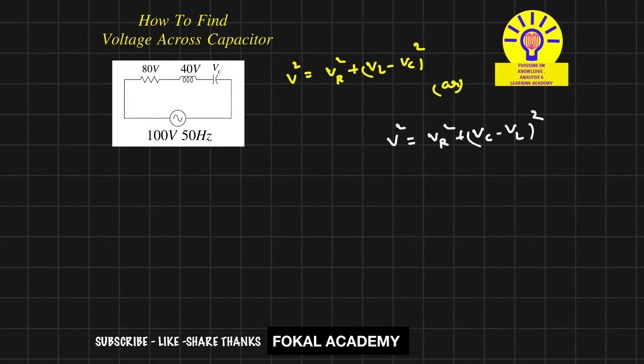Now substituting all values into the equation: 100 squared equals 80 squared plus (40 minus VC) squared, which gives us 10,000 equals 6,400 plus (40 minus VC) squared.